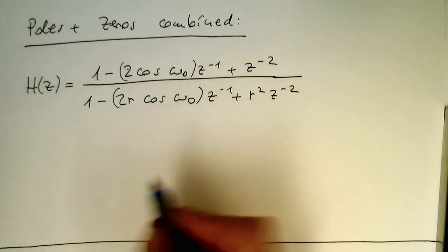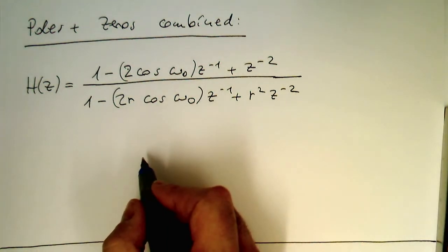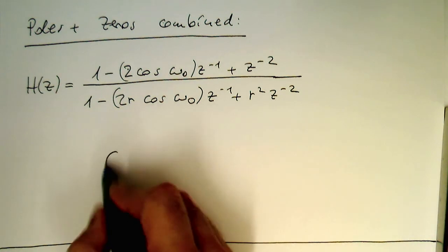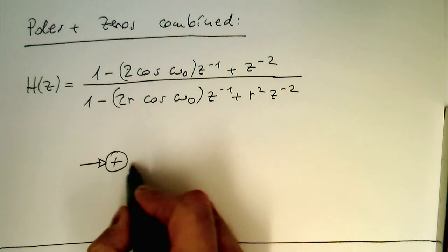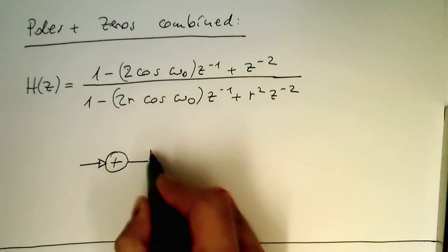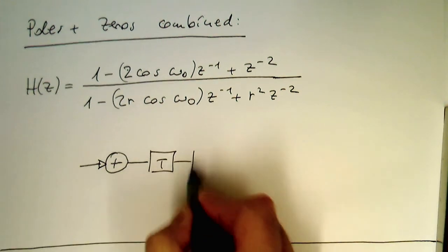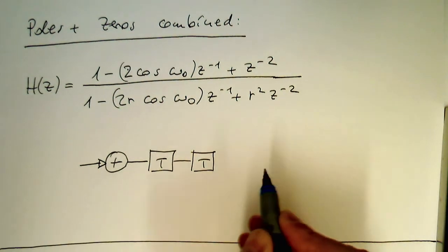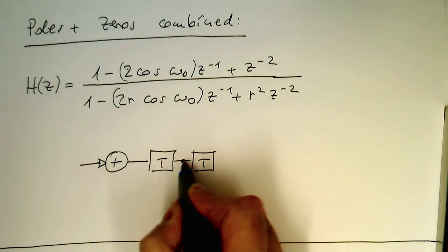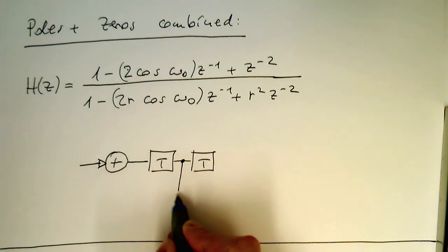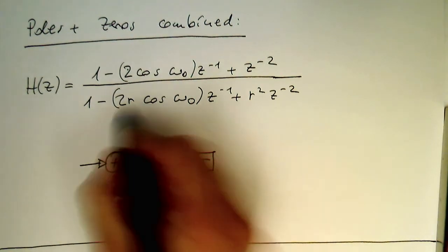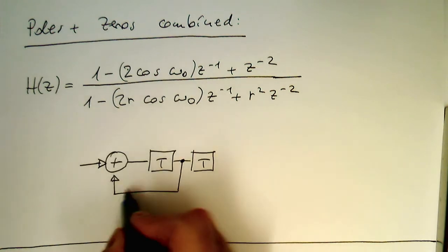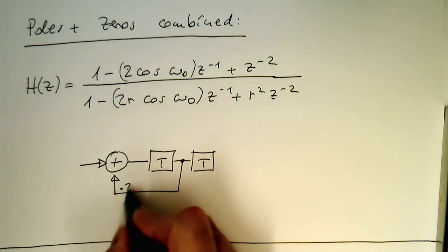And so the data flow diagram becomes also a bit more complicated with that. So we need to have a summation node at the input. And then we need to have two delay steps. So we know that. And then the one delay step here feeds back to the input here.